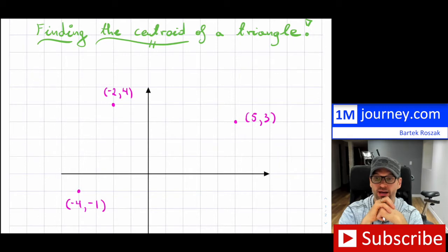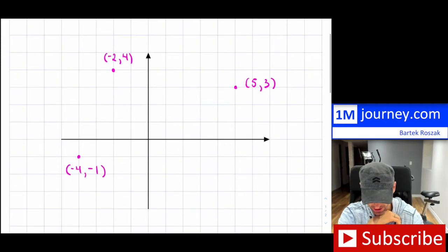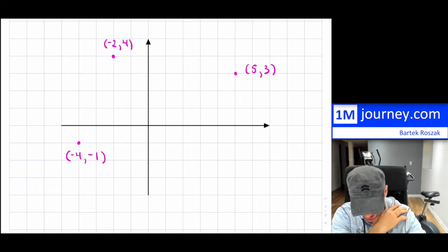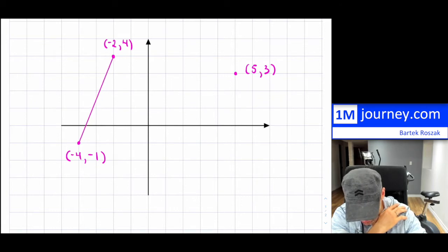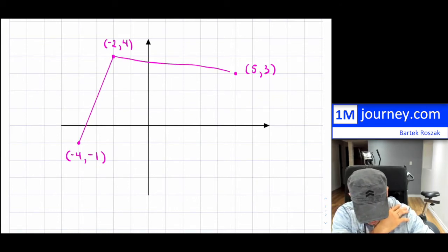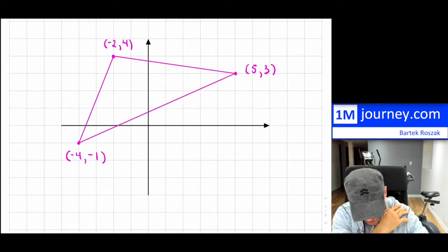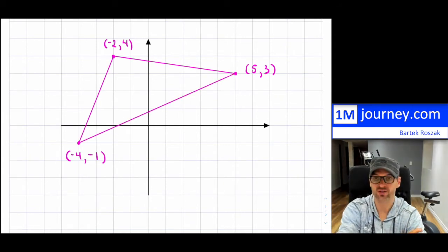I've plotted three points on a Cartesian plane, or basically an xy axis. We know that from three points we can create and construct an actual triangle. So I'm going to do that first so that we can have a visual for this triangle, and that is simply just connecting these points together. I didn't make the triangle an isosceles triangle or equilateral triangle or anything like that.